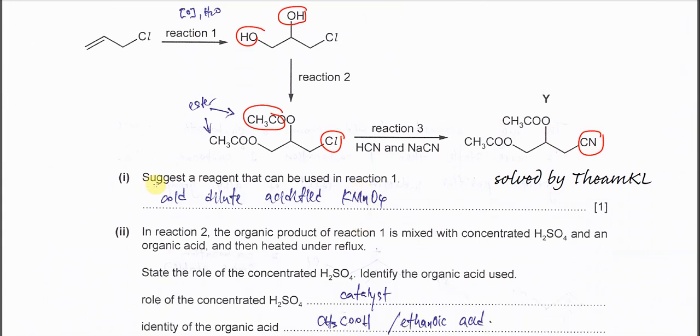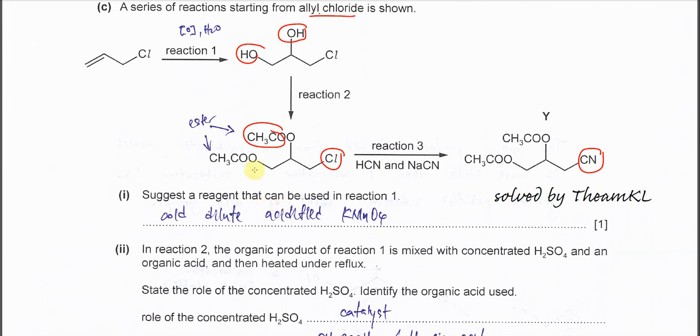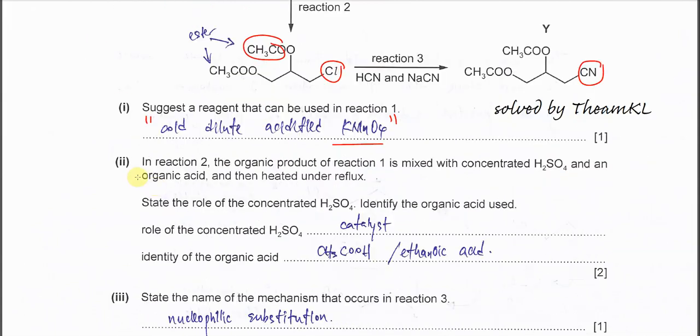Part C(i). Suggest a reagent that can be used in reaction 1. Reaction 1 is oxidation using KMnO4, OH-, and heat. Then the C=C double bond will form the diol.